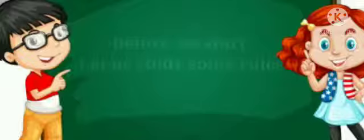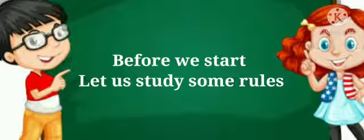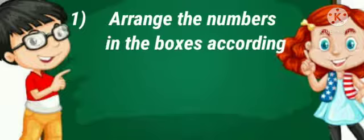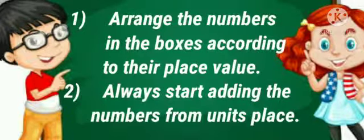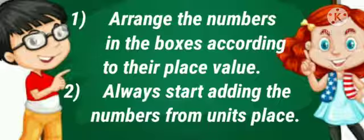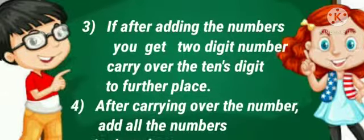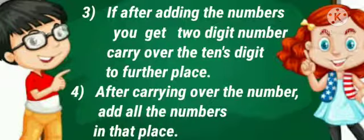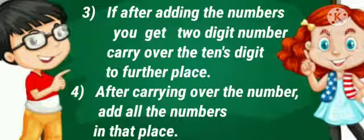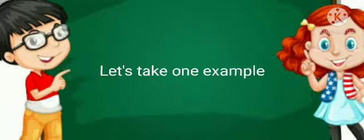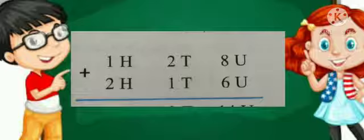Before we start, let us study some rules. First, arrange the numbers in the boxes according to their place value. Second, always start adding the numbers from the units place. Third, if after adding the numbers you get a two-digit number, then carry over the tens digit to the further place. Fourth, after carrying over the number, add all the numbers in that place.